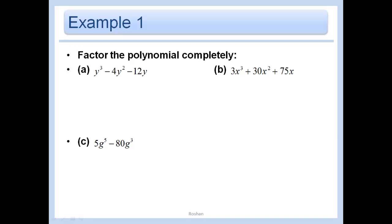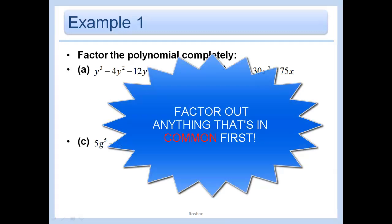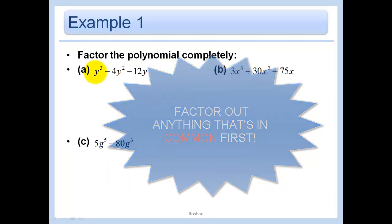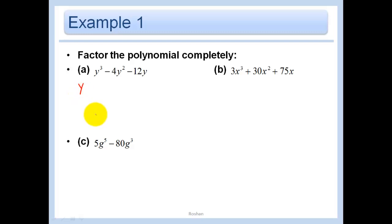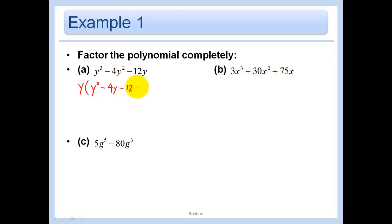We're going to start off with factoring. As I've said many times, if you can factor out something in common, do it first! In part A, I clearly see that a Y is in common, so factor that out. Y cubed divided by Y leaves Y squared, minus 4Y squared divided by Y is Y, minus 12Y divided by Y leaves the 12.